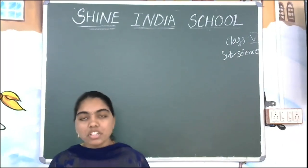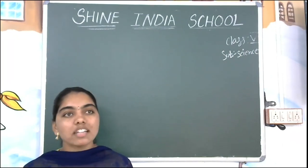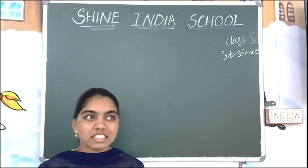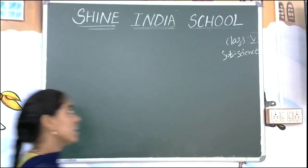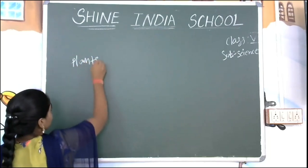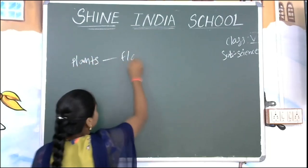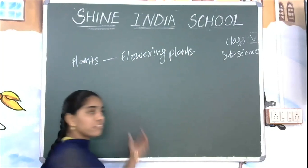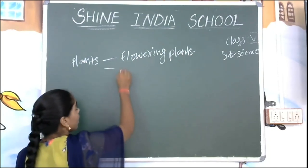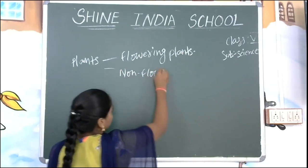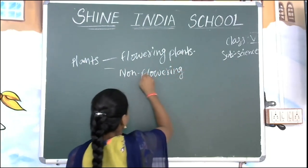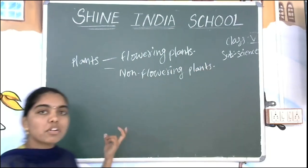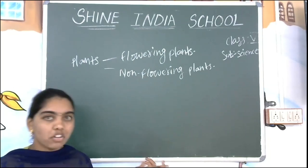We discussed about different types of plants — what are the seeds, which plants will produce seeds, which plants will not produce seeds. Plants are divided into two types: flowering plants and non-flowering plants. We have discussed about plants which are having flowers and those without flowers.